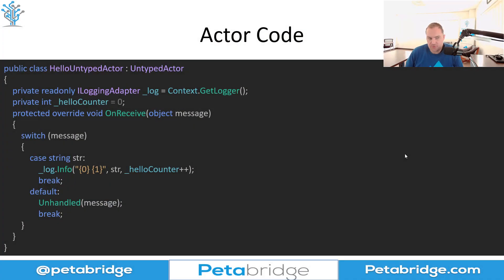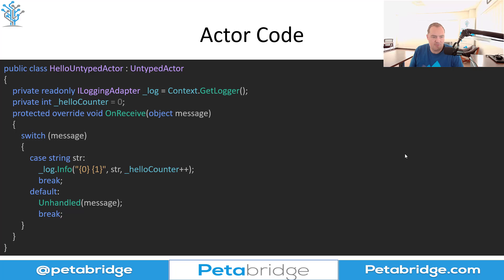This is what a really basic user-defined actor might look like. We implement the UntypedActor base class, and that just means we have to implement this abstract OnReceive method. This is where all of the messages we're going to process get handled by default. We also have a little bit of internal state and access to the Akka.NET logging system.